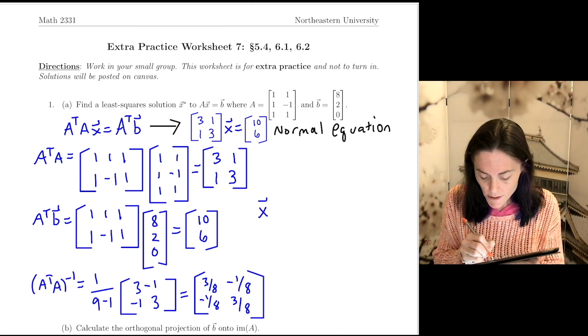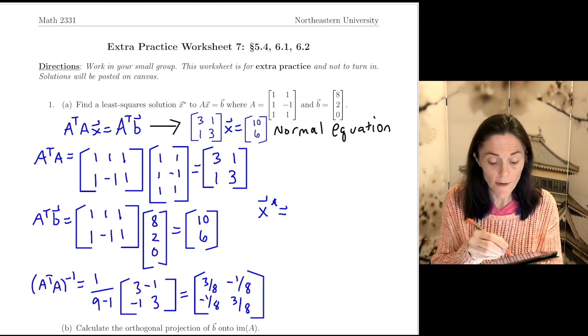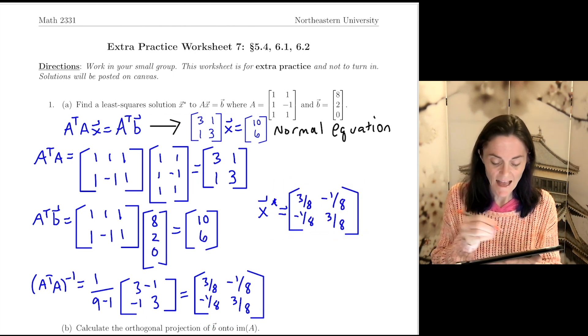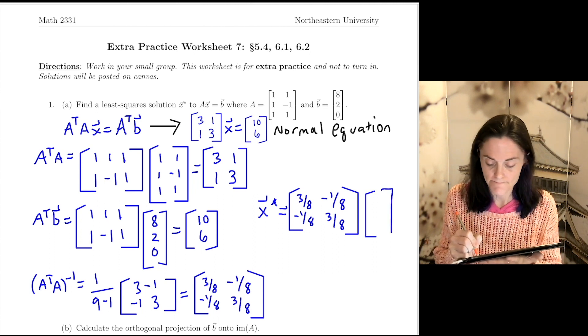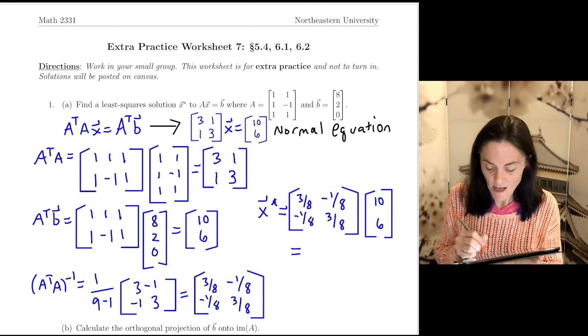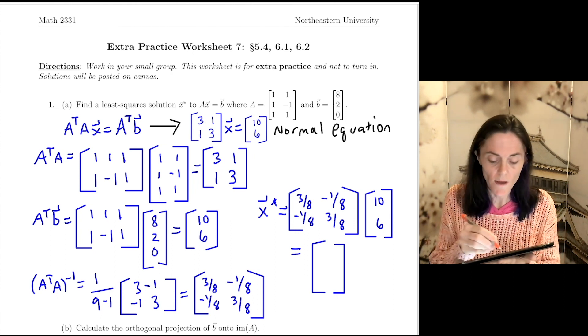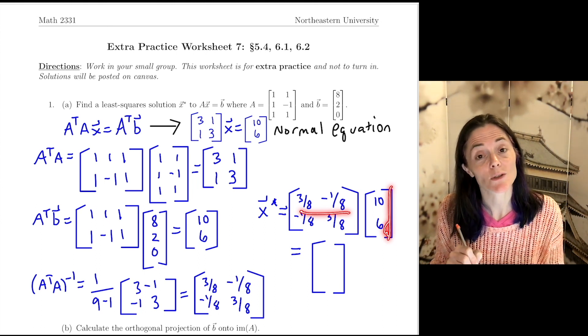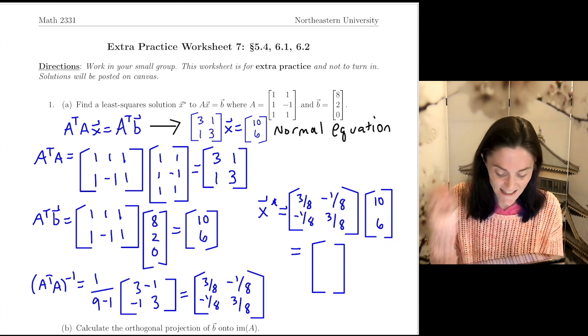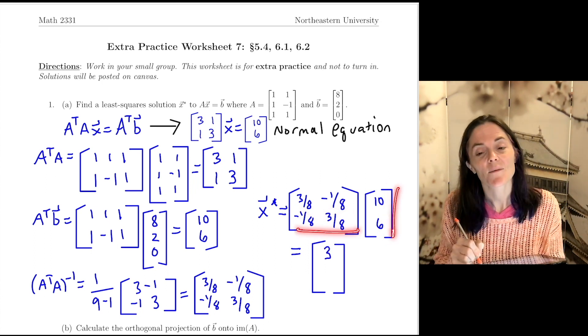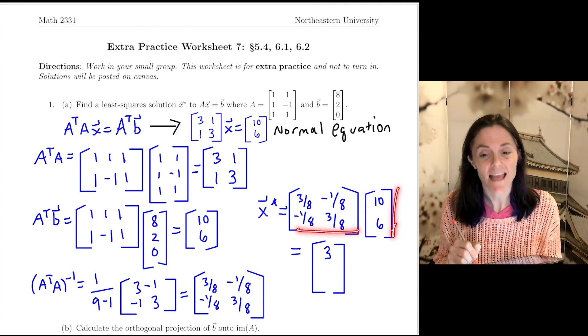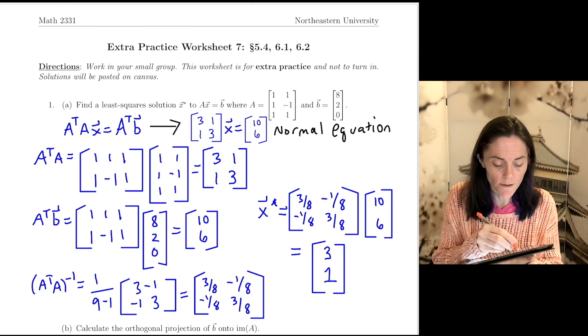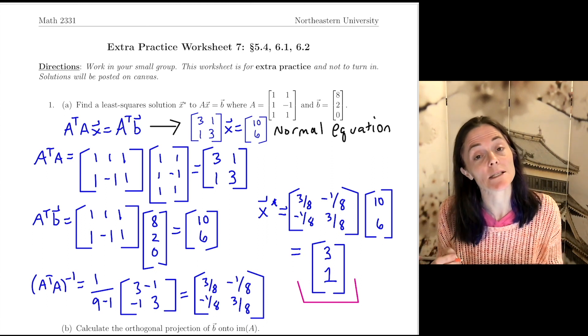So let's solve now. My least square solution, X star, will be, we just take this, A transpose A inverse. I will put this here, copy and paste, and then times this vector, 10, 6. What happens when I multiply this matrix by this vector? We get 30 minus 6, which is 24, and 24 over 8 is 3. We have minus 10 plus 18, which is 8. So we have 8 over 8. So this entry is 1. So this is my answer here in letter A. This is my least square solution.